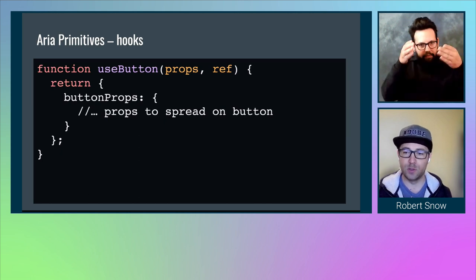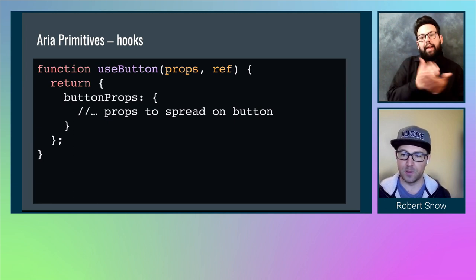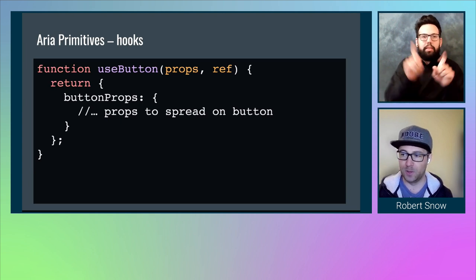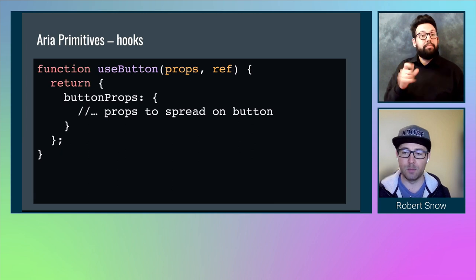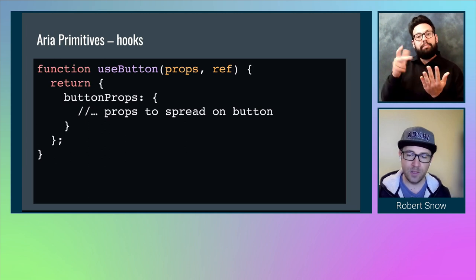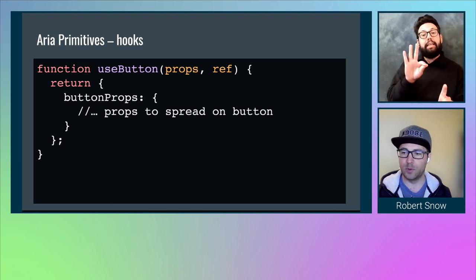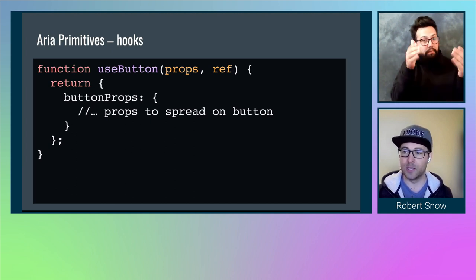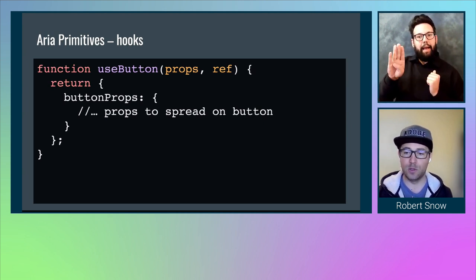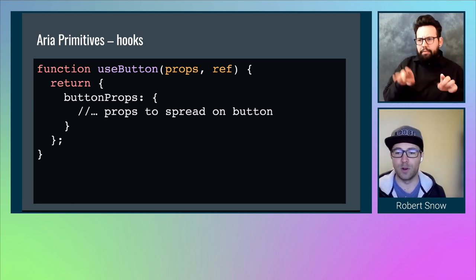One important prop that useButton takes is the elementType prop, which defaults to a button. This is important because different elements work with different attributes when you try to make them into a button. For instance, a native button or input might accept the disabled attribute, but a span really needs aria-disabled instead. Or for focus, a button or input is already tabbable, so we don't need to do anything — but a span needs tabIndex of zero. By using our hook useButton, you don't need to worry about the different behaviors; we'll normalize them across different element types.